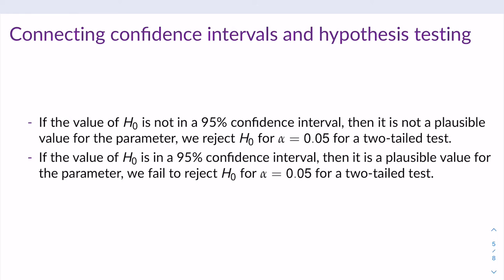You may have already drawn this connection, and if you haven't, this is a strong and powerful connection: the connection between a confidence interval and hypothesis testing. If the value of our null hypothesis is not within a 95% confidence interval, then it's not a plausible value for the parameter, which means we would reject the null hypothesis for alpha equals 0.05 if we're doing a two-tailed test. Similarly, if the null hypothesis value is in the 95% confidence interval, it is a plausible value for our parameter, and we would fail to reject the null hypothesis for alpha equals 0.05 for a two-tailed test.